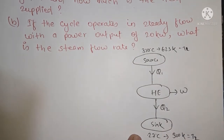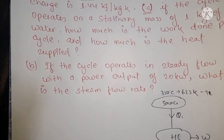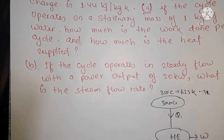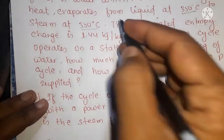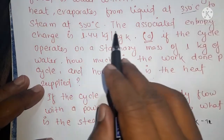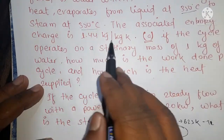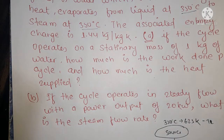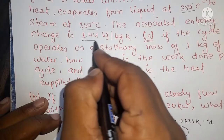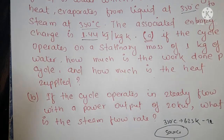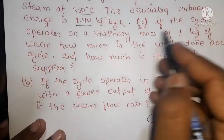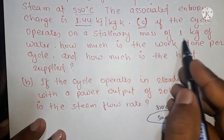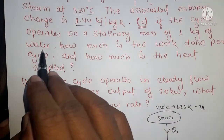For the heat engine, the associated entropy change is 1.44 kilojoule per kg Kelvin. The entropy is 1.44 kJ/kg·K, and the cycle operates on a stationary mass of 1 kg of water.